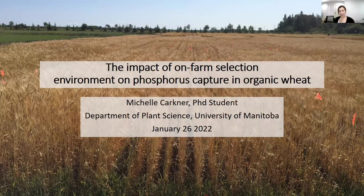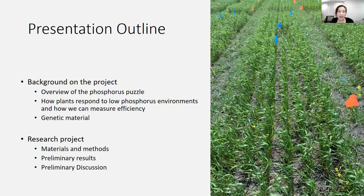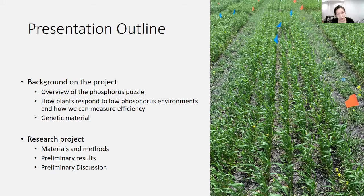Hello, my name is Michelle Karpner, and I'm a PhD student within the Department of Plant Science at the University of Manitoba. Today the title of my talk is The Impact of On-Farm Selection Environment on Phosphorus Capture in Organic Beats. This is an outline of the presentation: a bit about the background of the project, an overview of the phosphorus puzzle within agroecosystems, how plants respond to low phosphorus environments and how we can measure efficiency, and the genetic material I'm using within the project. Then we'll move into the experiment, materials and methods, preliminary results, and some preliminary discussions.